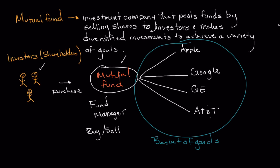Just to review as we wrap up: the basic concept of a mutual fund is that one company pools resources together by acquiring investment from investors. They take those resources and purchase a basket of goods — a variety of different stocks, bonds, or whatever fits the fund's goal and objective. From an investment standpoint, you simply purchase that mutual fund and get broad exposure to all of those different securities, resulting in a relatively diversified portfolio.